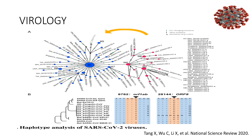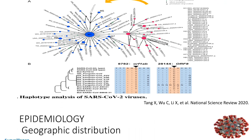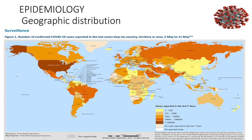This diagram demonstrates the haplotype networks of SARS-CoV-2. The blue color represents the L strain and the red represents the S strain. The orange arrow indicates that the L type evolved from the S type strain. Genome sequence studies indicate that the S type was most likely the ancestral version of SARS-CoV-2.